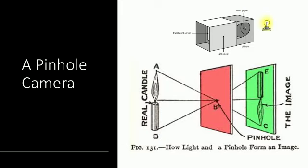Here, a light ray from the top of the candle passes through the small hole and falls on the thin paper at the bottom. Then a light ray from the bottom of the candle passes through the small hole and falls on the paper at the top. Together, these points of light make up an inverted image of the candle.